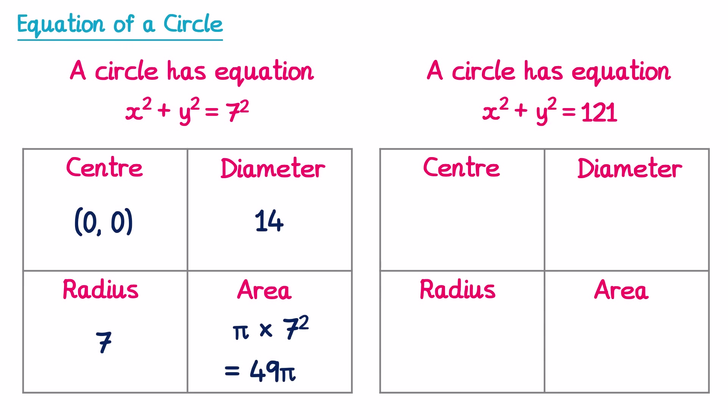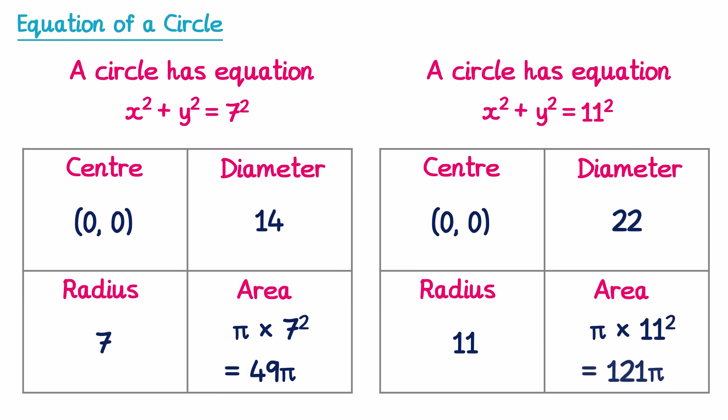Now let's try a second example: x² + y² = 121. We rewrite 121 as 11², and the centre must be (0, 0). The radius is 11, the diameter is double 11 which is 22, and the area is π × 11² = 121π.